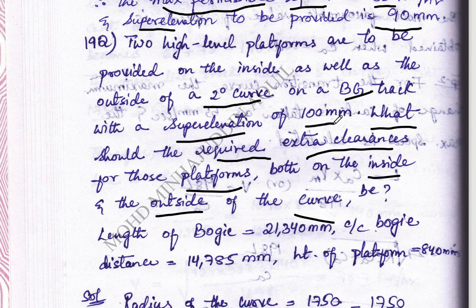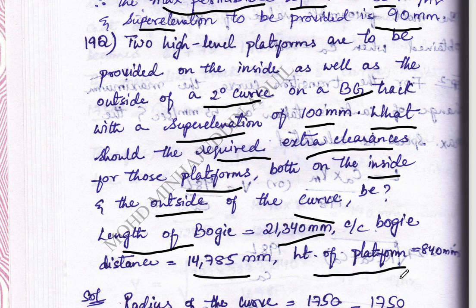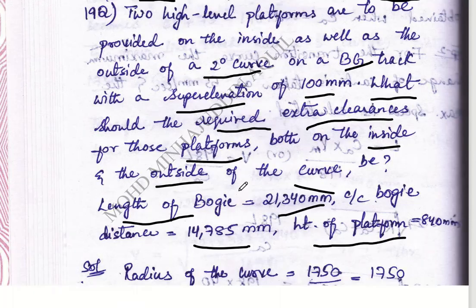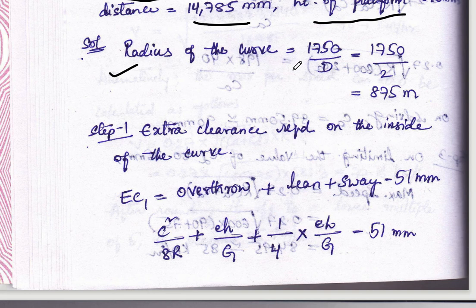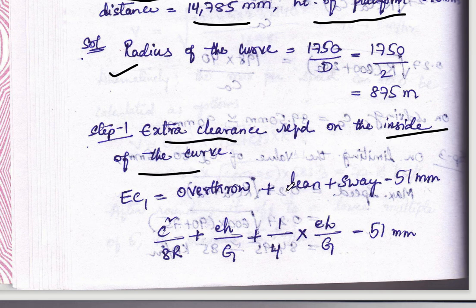The given data includes: super elevation value as 100 mm, length of the bogie, center-to-center distance of the bogie, and height of the platform. Coming towards the solution, first we find the radius of curvature. Then in step 1 we calculate the extra clearance required for the inside of the curve.